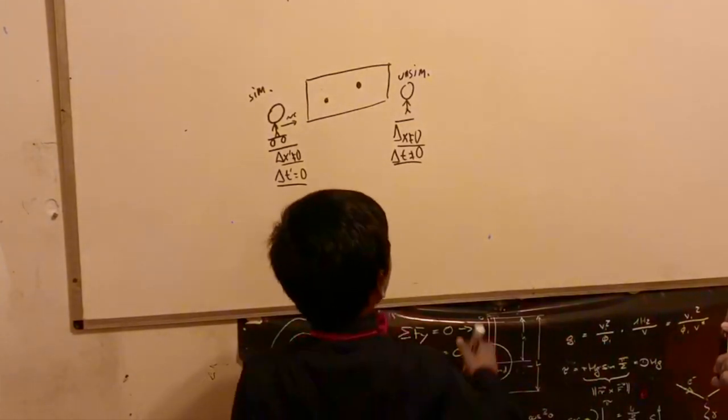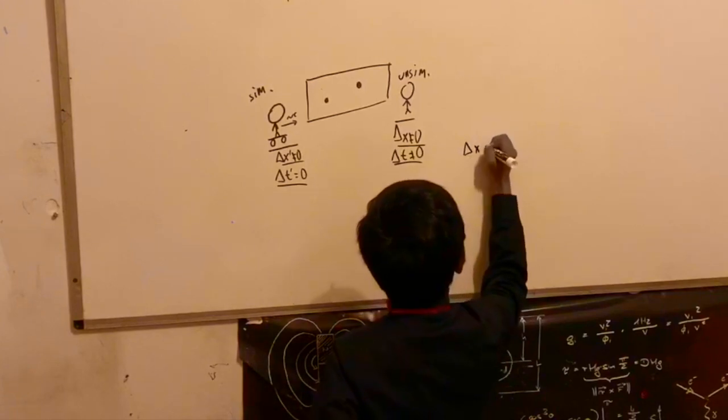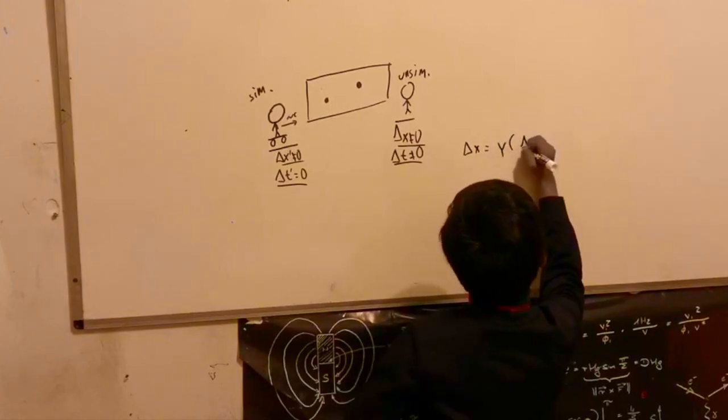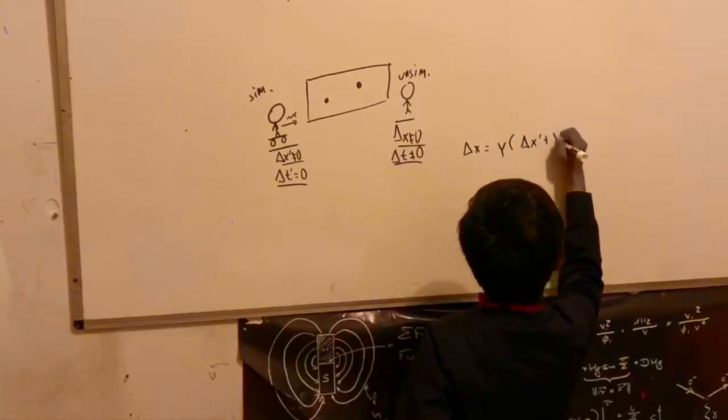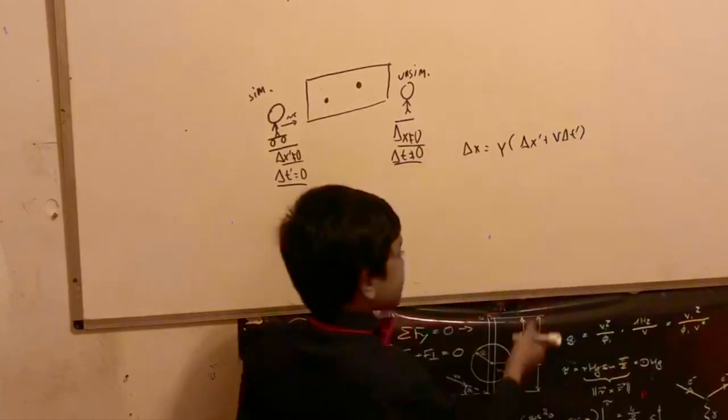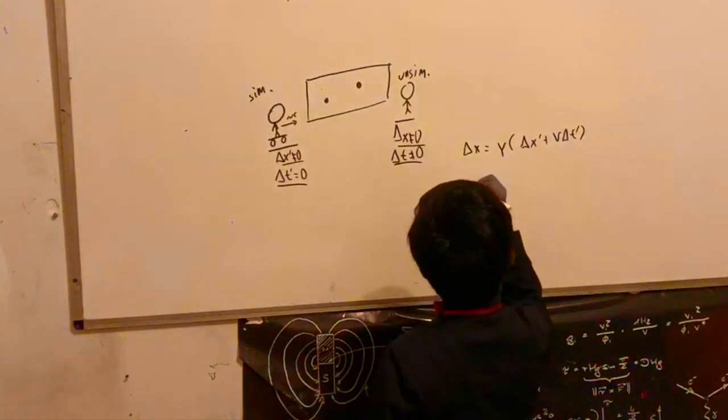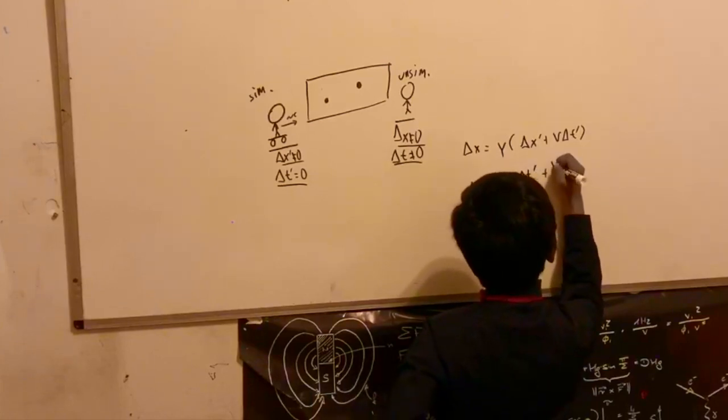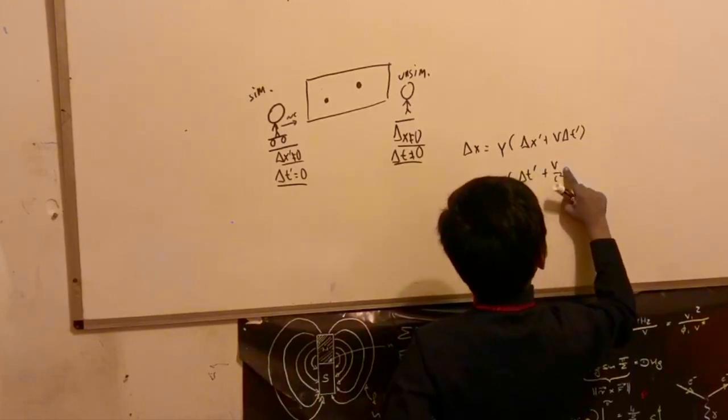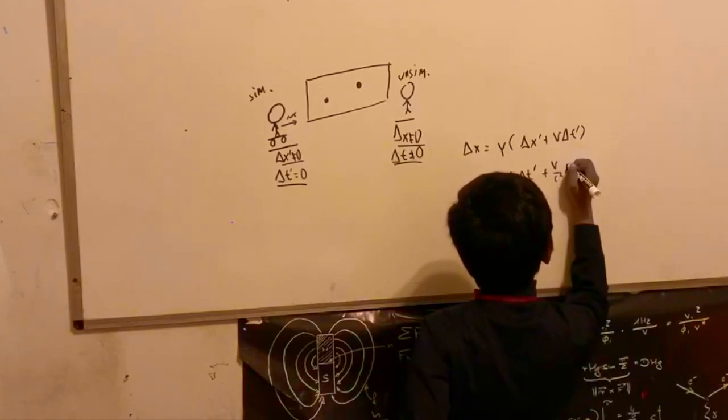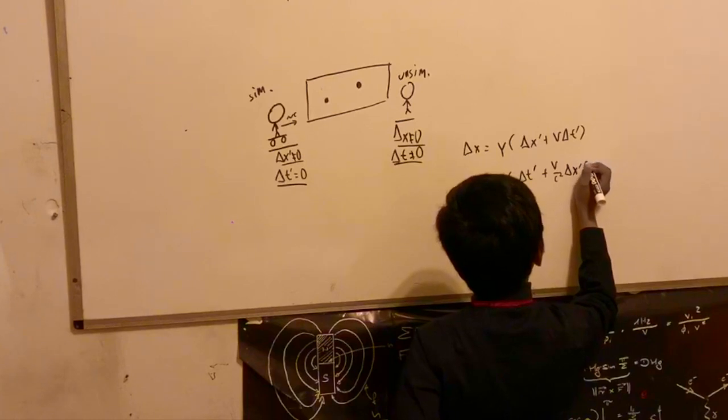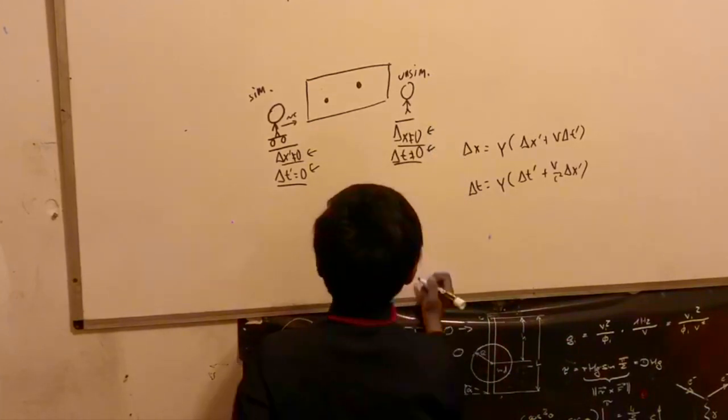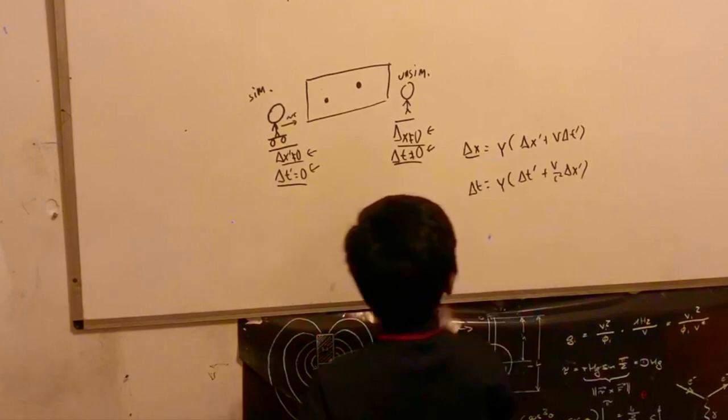As a recap from last time, we took the Lorentz equation for specifically these ones: delta x is equal to gamma times delta x prime plus v delta t prime. And then we had delta t equal to gamma times delta t prime plus v over c squared delta x prime. We can actually plug in these non-zero and zero values in.